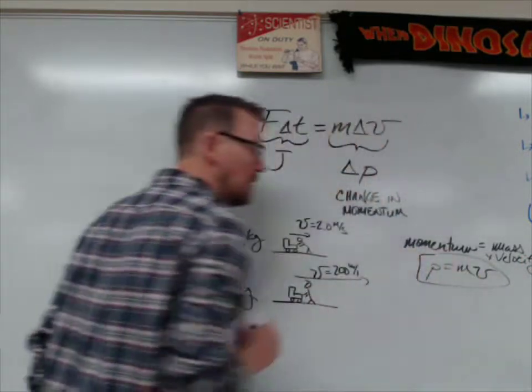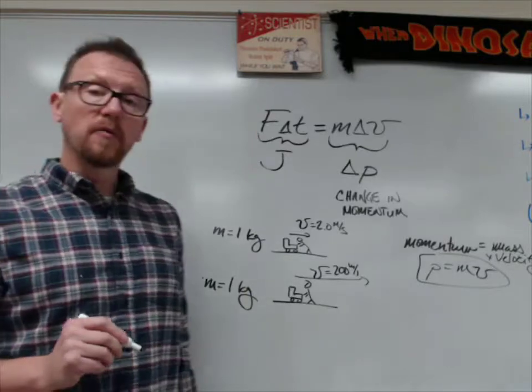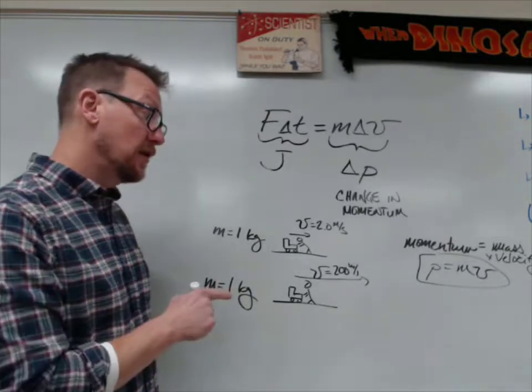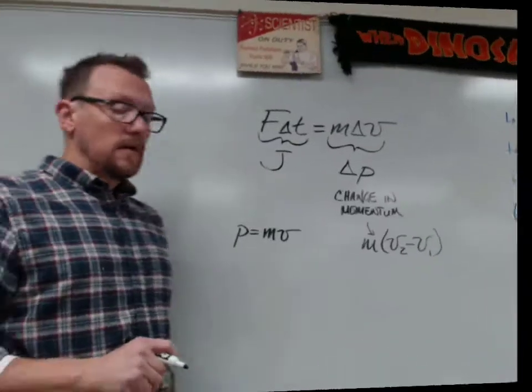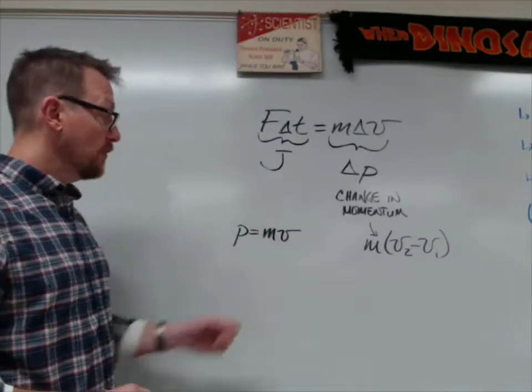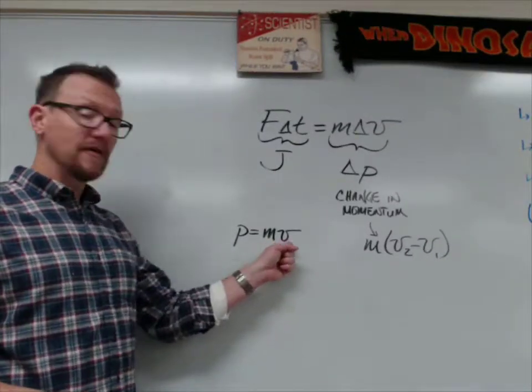And so here's our formula for momentum. The momentum, P, is equal to the mass times the velocity. So now we have this concept of momentum, which is the product of the mass and the velocity.